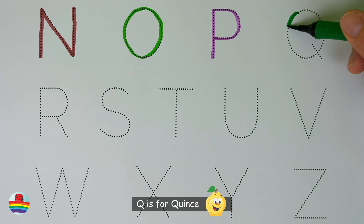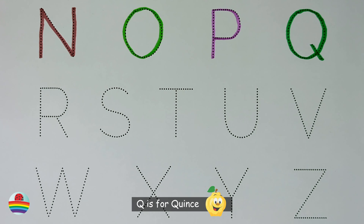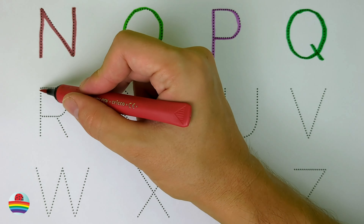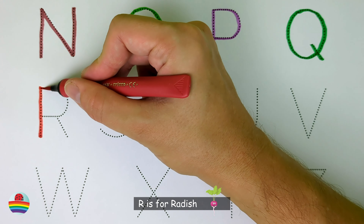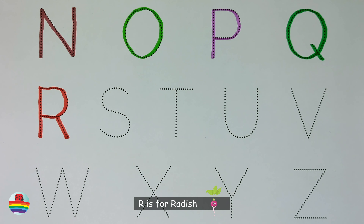Q. Q is for Quince. Q. R. R is for Radish. R.